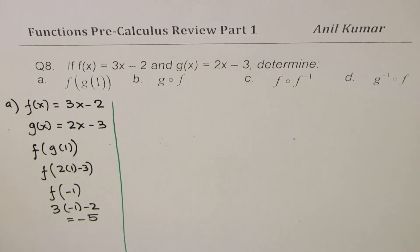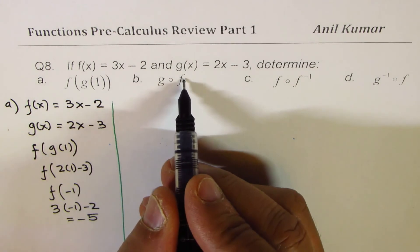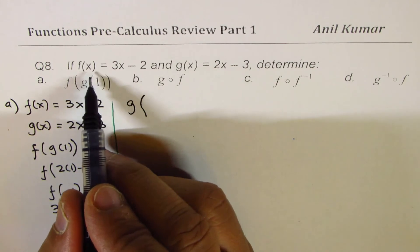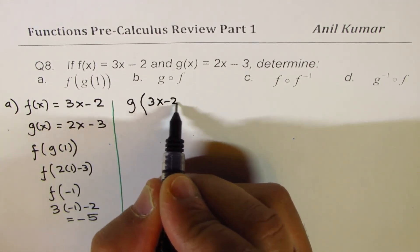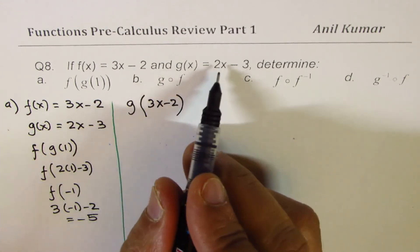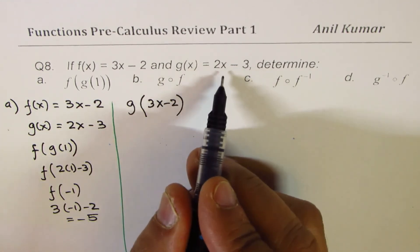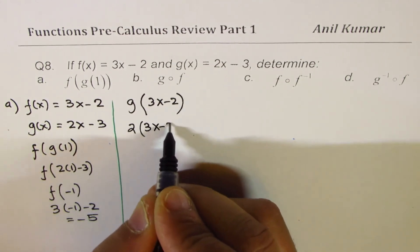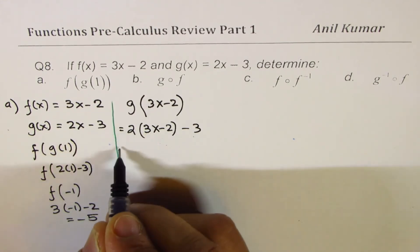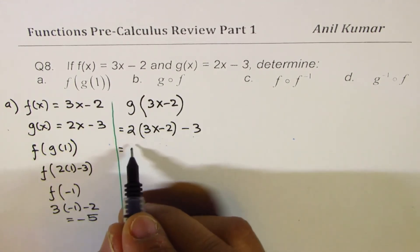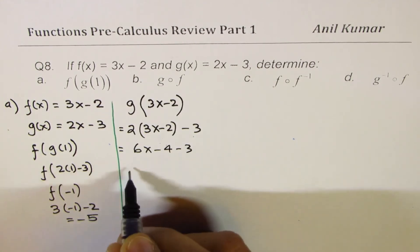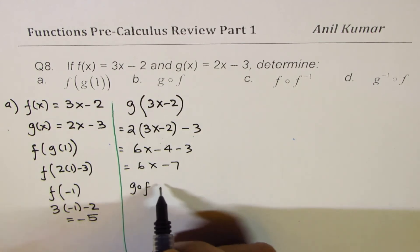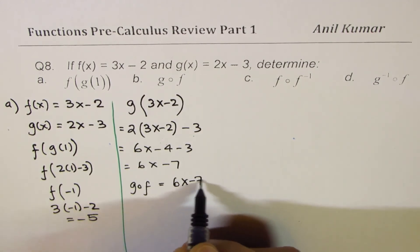Part (b): g(f(x)) — substitute f(x) = 3x-2 into g: 2(3x-2) - 3 = 6x - 4 - 3 = 6x - 7. So g(f(x)) = 6x - 7.